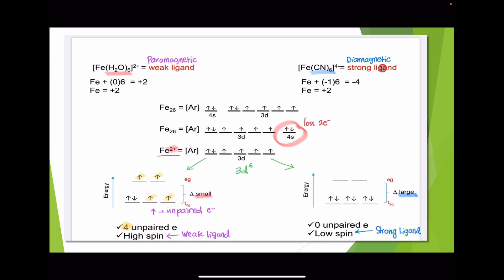For the strong field ligand — the hexacyanoferrate(2-) ion — the orbital splitting diagram is also octahedral, same as the hexa-aqua iron(2+) ion, with T2G at the lowest energy level. Because this is a strong field ligand, it tends to form a diamagnetic complex, so pairing occurs preferentially. You fill the T2G level first with pairing: 1, 2, 3, 4, 5, 6.